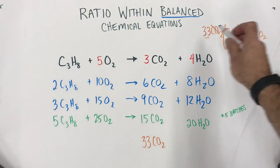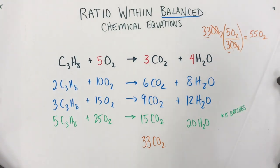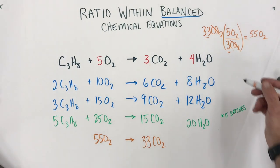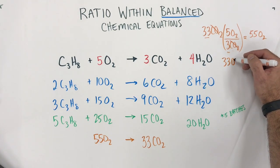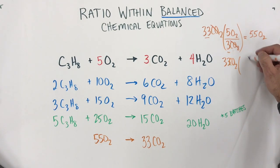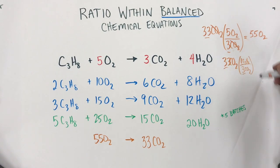Again, the point of the unit factoring is if you maybe just don't see that batch thing, you're feeling not totally confident. So, coming over here, this would require 55 oxygen to make 33 carbon dioxide. But, it would also require a certain amount of propane. So, we could go back here again and say, okay, 33 CO2s. For every three CO2s, I need one C3H8, one propane. Again, this gives me that batch idea. It's 11 times 1 is 11 propane.